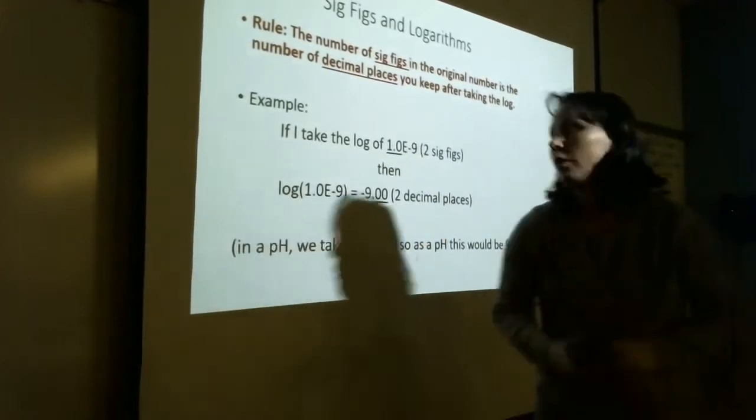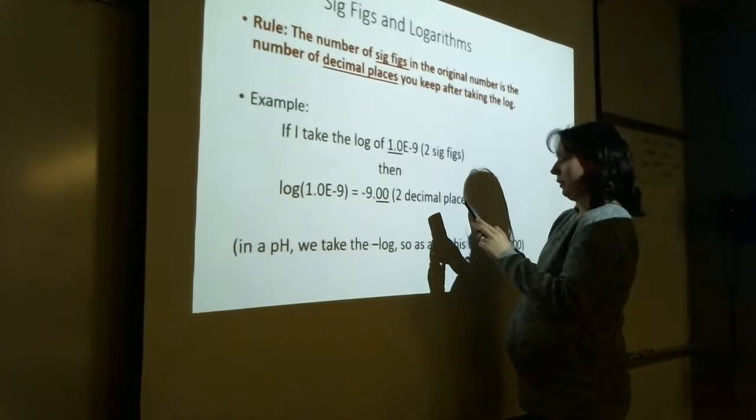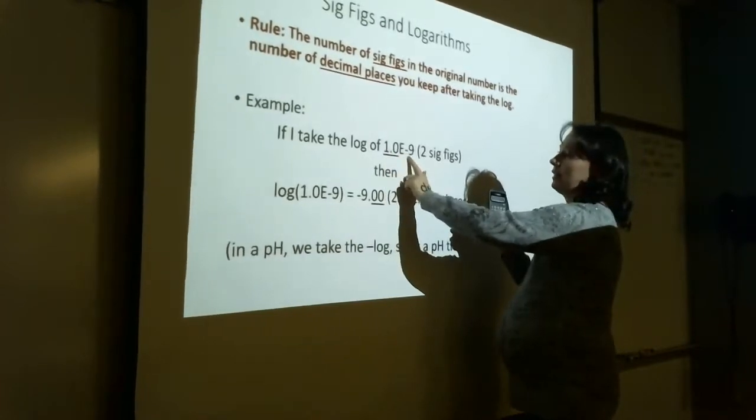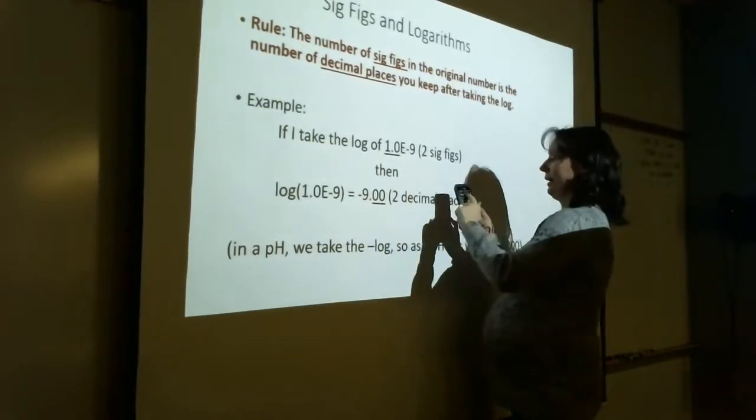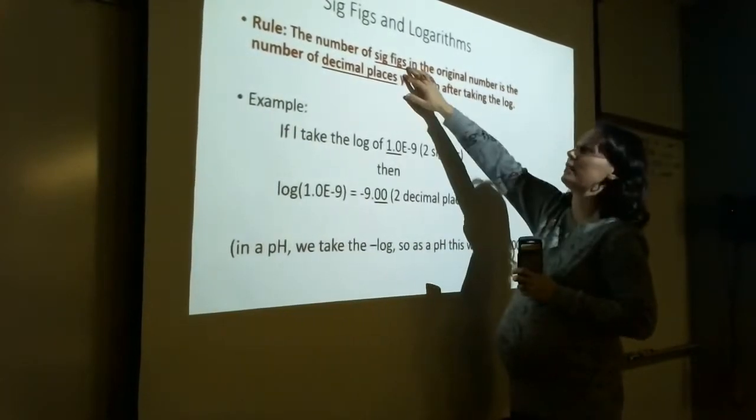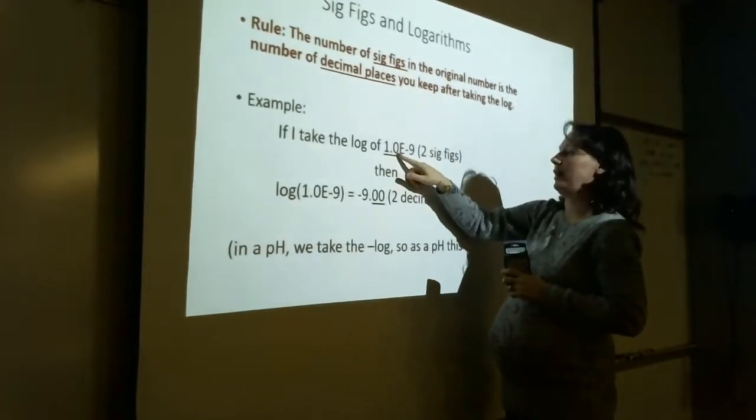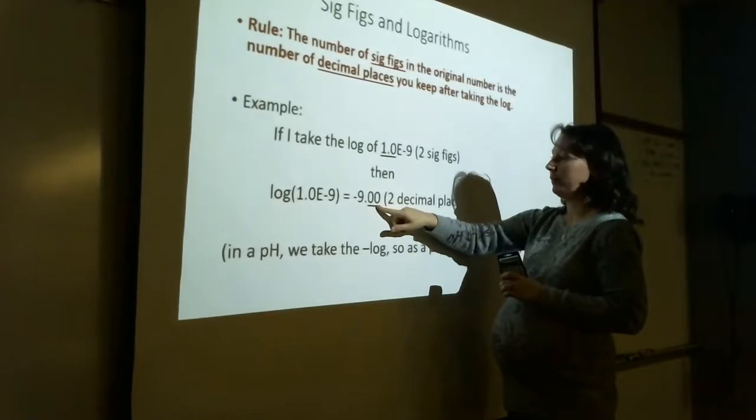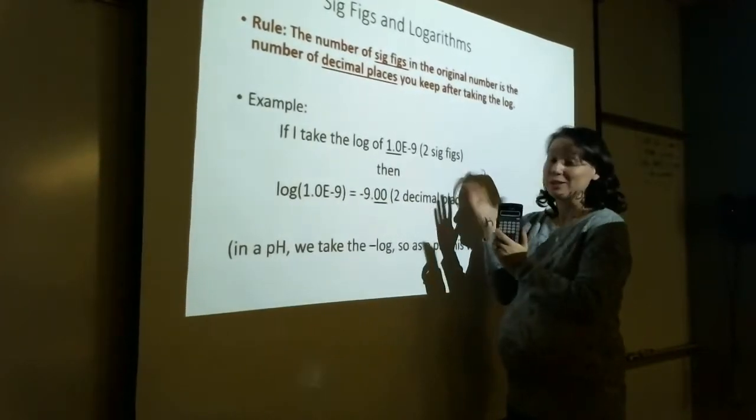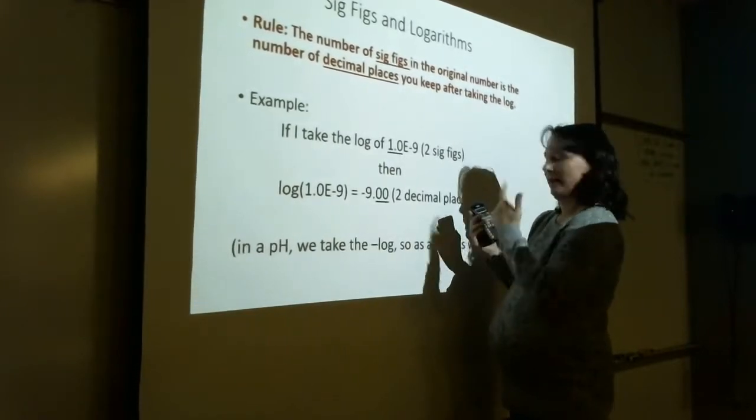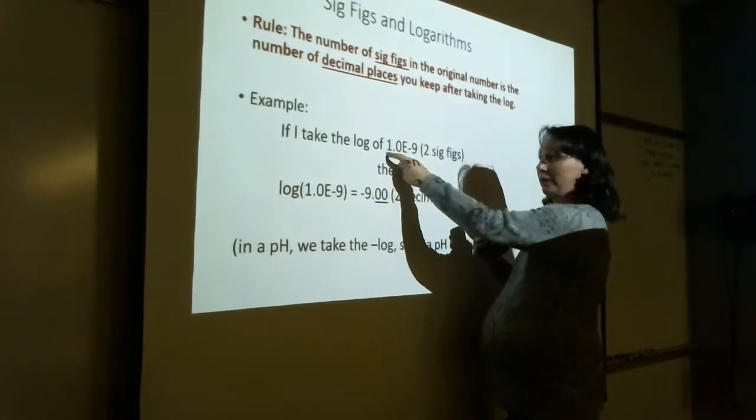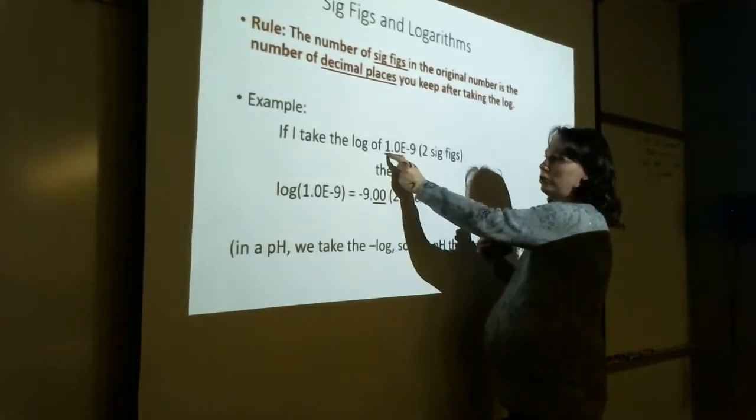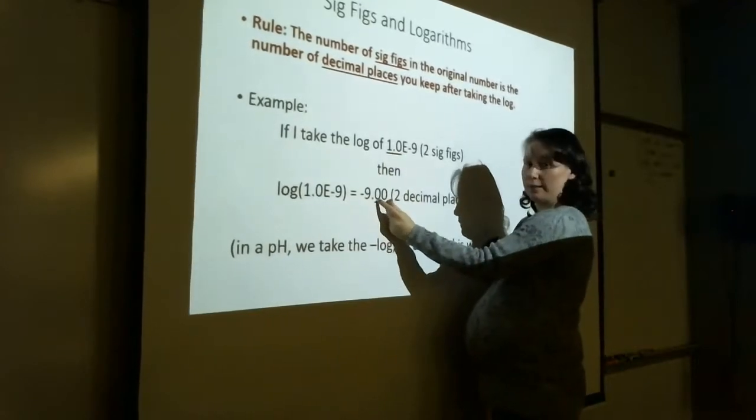If I take the log of that number, 1 times 10 to the negative 9th, so 1.0 e minus 9, and I take the logarithm of it, it comes out as negative 9 on my calculator. However, because of sig fig rules, the number of total sig figs is the number of decimal places you keep in your answer after taking the log. Even though my calculator says 9, my calculator doesn't know anything about sig figs. I know that to represent the level of accuracy in this measurement in my logarithm answer, it needs to be 9.00. If there are two sig figs in the number, you need two decimal places after you take the log.